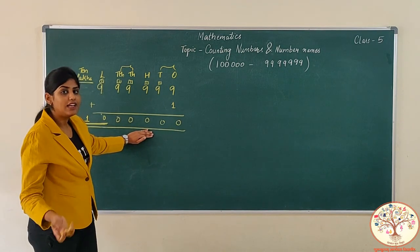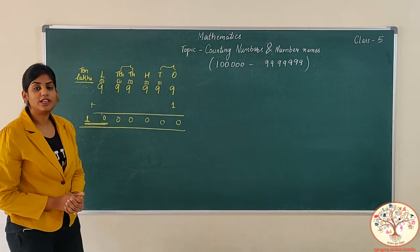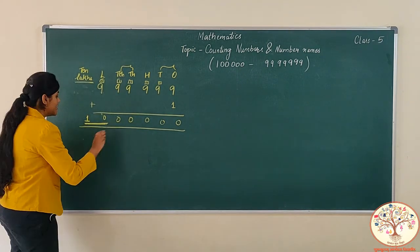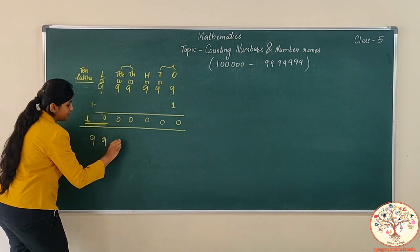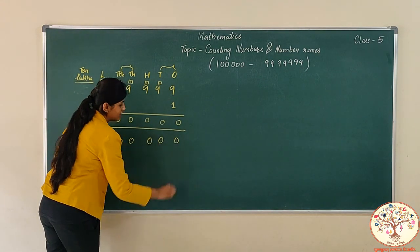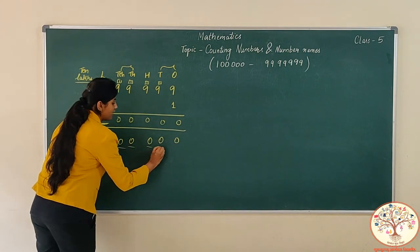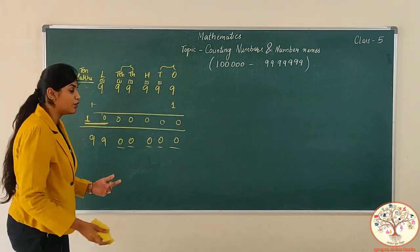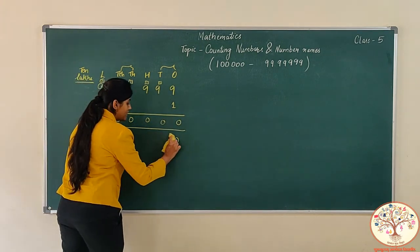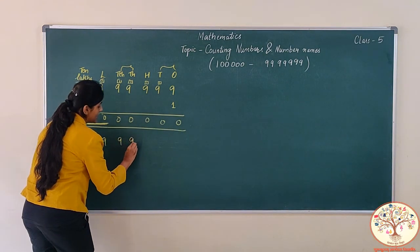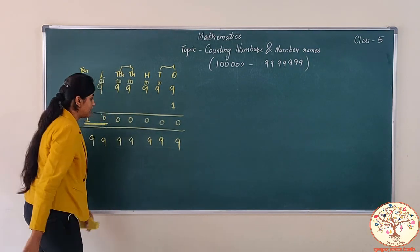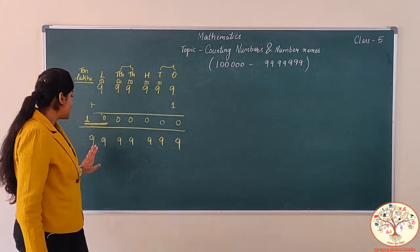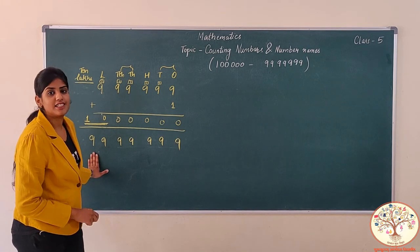The number name will be 10 lakhs. The counting goes on: 10 lakhs, 11 lakhs, 12 lakhs, and it will go on till 99 lakhs. We can also increase this number from 0 — writing the largest 5-digit number here, that is 99,999. So you can see this is the smallest 7-digit number and this is the largest 7-digit number.